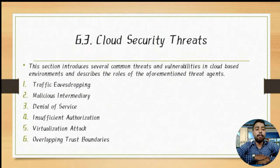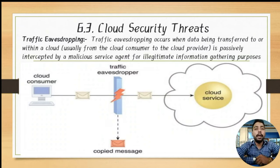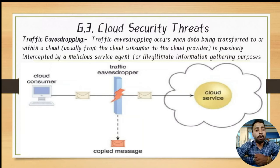Let's start without wasting time. The first threat is traffic eavesdropping. Traffic refers to the number of packets transferred in the cloud. Eavesdropping occurs when data being transferred between a cloud consumer and a cloud provider is passively intercepted by a malicious service agent to gather illegitimate information — data from cloud consumers, cloud providers, or cloud services is copied.